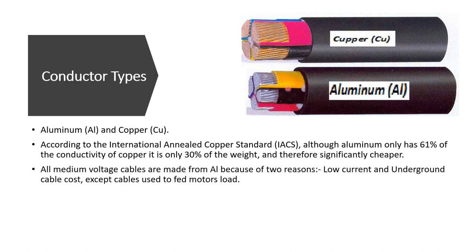Aluminum is used in the medium voltage network for two reasons: medium voltage networks have lower current, and underground cable cost is lower in that case. However, if cables supply current to motors at medium voltage, for example at 11 kV, copper is used because its higher conductivity means lower voltage drop.